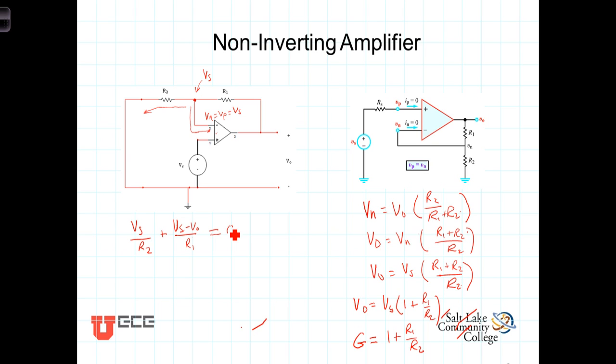So what that's saying is that, in fact, just as we saw over here, the current is going from the output through these two resistors back. It's going from the output through these two resistors to ground. These two resistors are in series because the current going in here is 0.